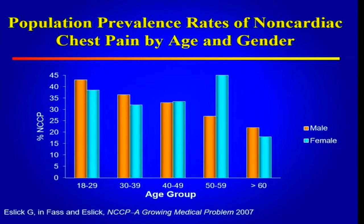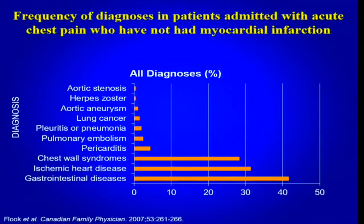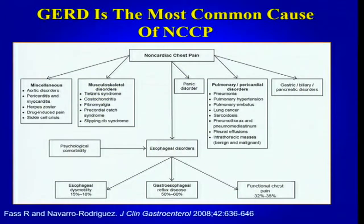It's very interesting that when you look at acute chest pain presenting at the emergency department, ischemic heart disease is not the number one cause. Instead, it's gastrointestinal disease, where esophageal disorders are the number one cause. One has to also add that panic disorder is a very important underlying driver of acute chest pain.